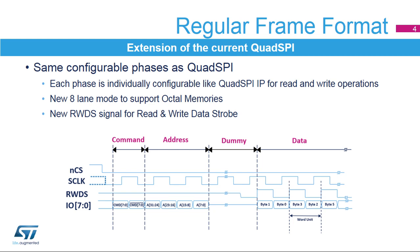The OctoSPI interface offers high flexibility for frame format configuration to address any serial flash from single data lane up to eight data lines. As with regular quad SPI, the user can enable or disable each of the phases, configure the length of each phase, and configure the number of lines used for each phase from one to eight. A new signal RWDS acts as either a write strobe during write operations or a read qualifier during read operations.